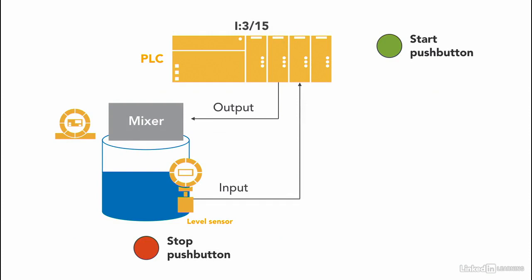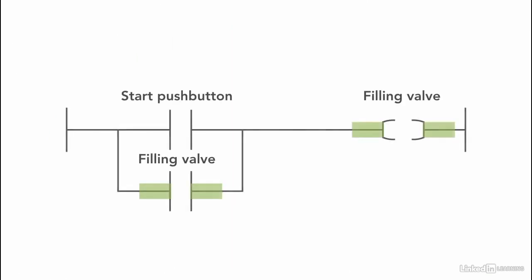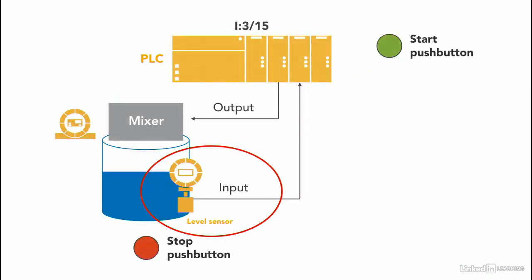Now, once the liquid reaches the setpoint that is sensed by the level sensor, the valve closes. So again, once the level sensor input is on, the valve stops. And very similar to what we covered in the conveyor belt example, the sensor is an input and it's off until the liquid reaches a certain level. Then the sensor turns on.